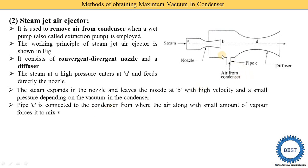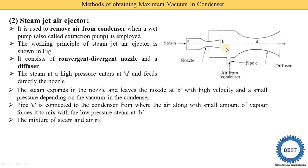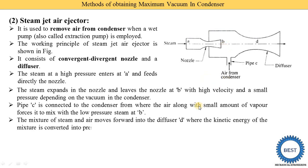Pipe C is connected to the condenser, from where the air along with a small amount of vapor is forced to mix with the low-pressure steam at point B. Then this mixture of steam and air moves forward into the diffuser. In the diffuser, the kinetic energy of the mixture is converted into pressure energy — kinetic energy is reduced and pressure energy is increased — and then the mixture of steam and air leaves the diffuser.